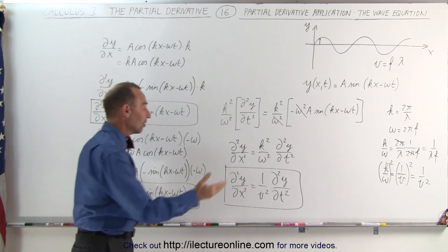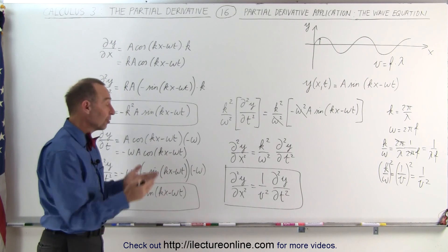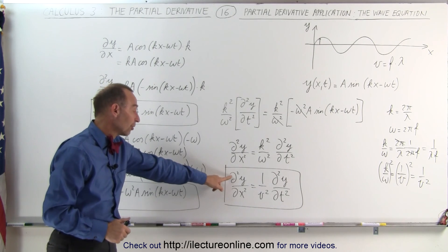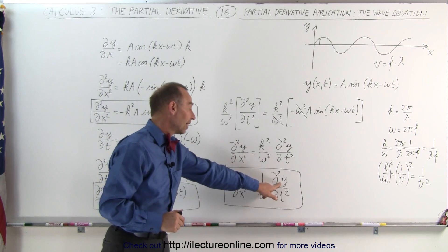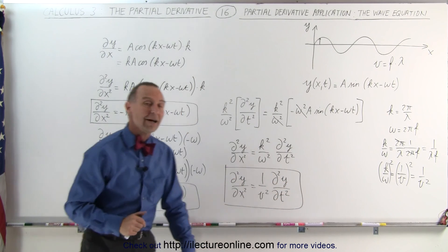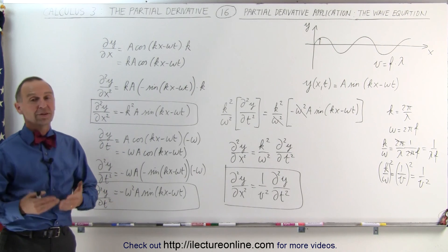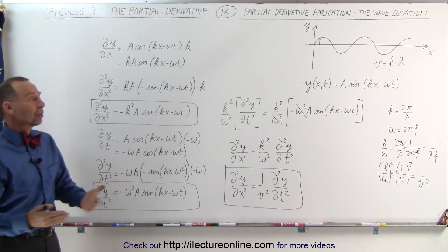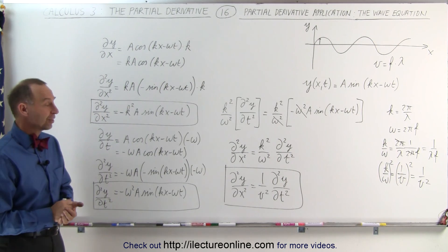If the wave equation satisfies this equation, then we know it's a true wave equation. Notice how it's written as partial derivatives: the second partial derivative of the wave function with respect to position x on one side, and the second partial derivative with respect to time t on the other. That's how we can use partial derivatives to describe waves in space, electromagnetic radiation, waves on a string, or waves of any type.